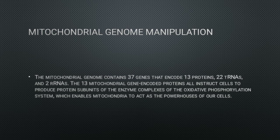Now we talk about mitochondrial genome manipulation and how many genes are encoded. In total, there are 37 genes: 13 proteins encoded, 22 transfer RNA subunit genes, and 2 ribosomal RNA subunits. These 13 mitochondrial gene-encoded proteins instruct all the cells to the subunits of proteins, specifically the subunits of the enzyme complexes of the oxidative phosphorylation system.